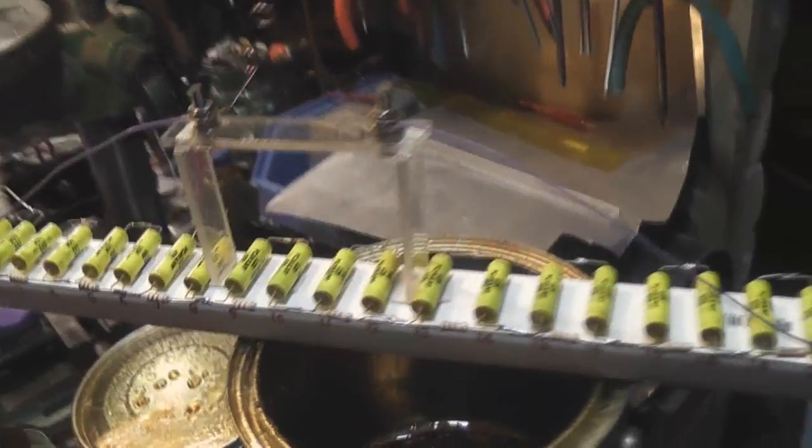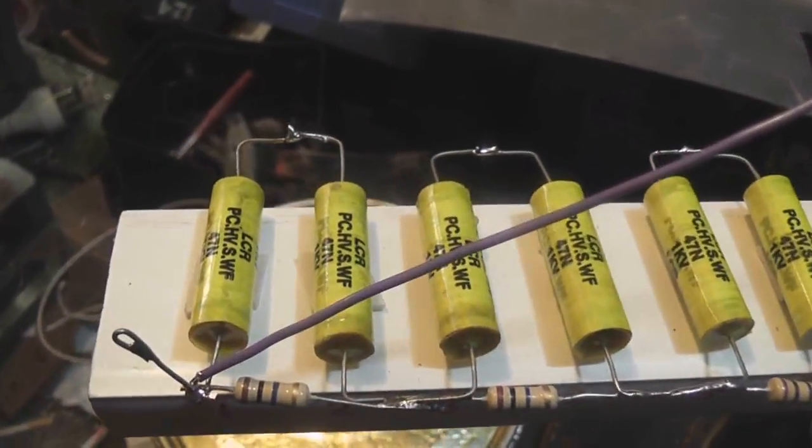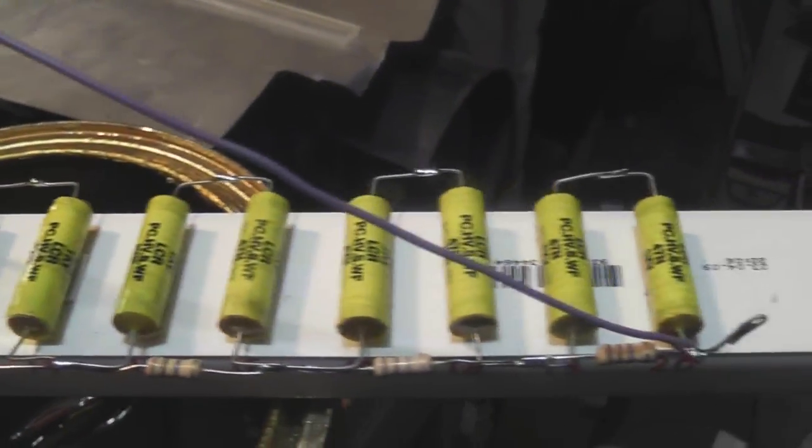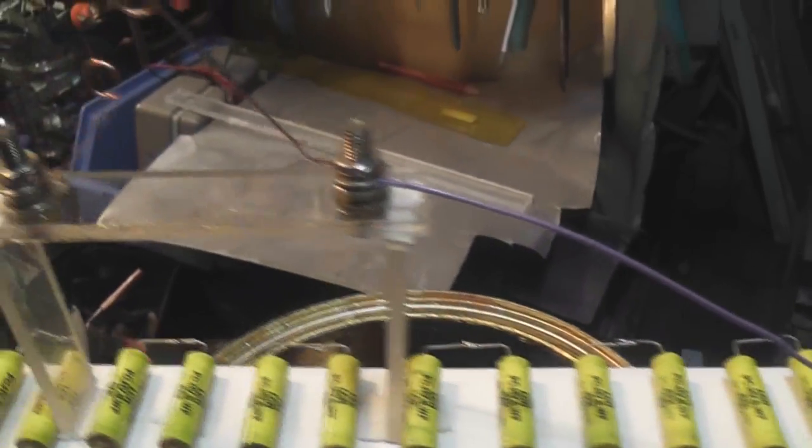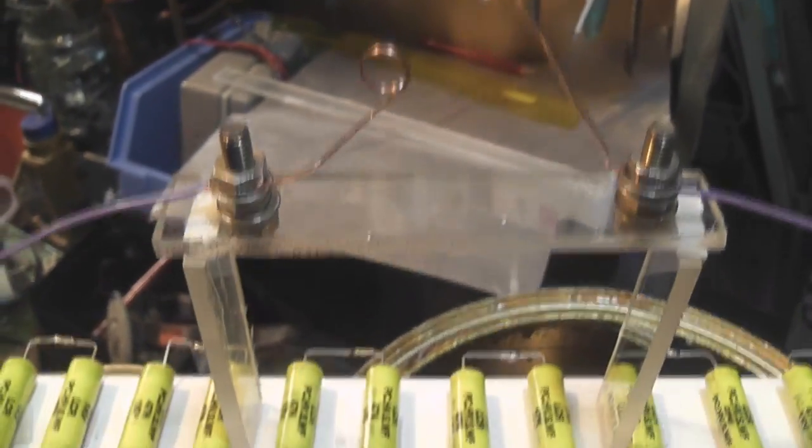Here's also my 20 capacitor stack which I rebuilt earlier tonight. So I've got them all nicely in series with the bleeder resistors, 10 megohms, and I made a little spark gap just for protection of the capacitors in case of a surge.